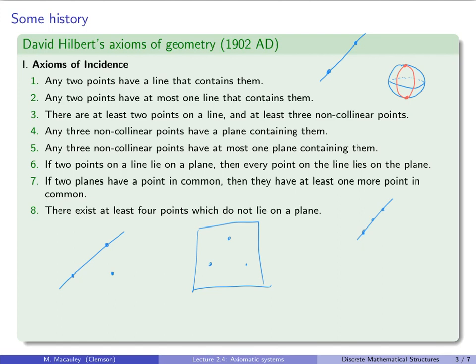Next, any three non-collinear points have at most one plane containing them. So basically, three points that do not lie on the same line determine a unique plane.